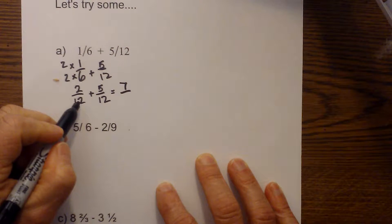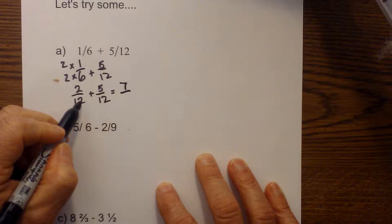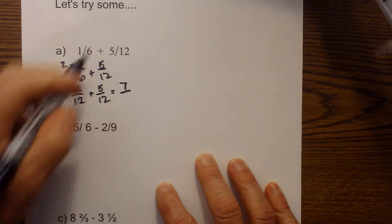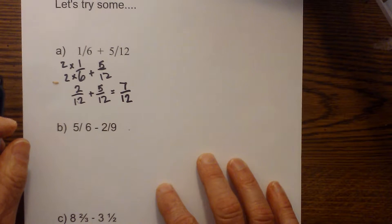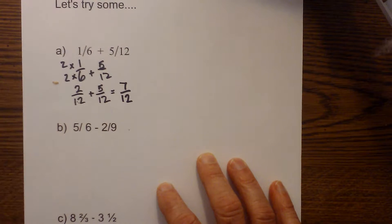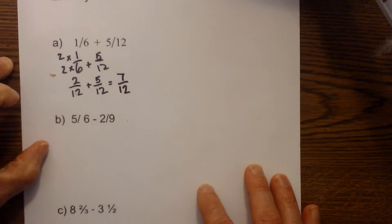And remember, step three was you keep these the same. So I keep these the same. And that's seven twelfths. And then the last step is I simplify. And seven is a prime number, so I cannot simplify anymore.